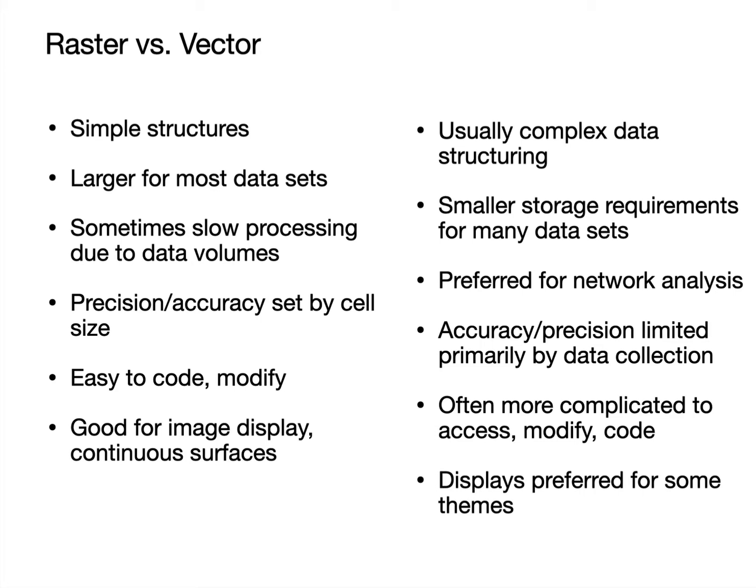Raster data basically have simpler structures — though there are lots of nuances and changes in structures to make raster more complicated for various reasons, for quicker access, for indexing, and other things. But basically, it's just a simple list of cells, so it's easy to access and use code. Vector data are usually complex. The vector data descriptions are shown here on the right and the raster data on the left.